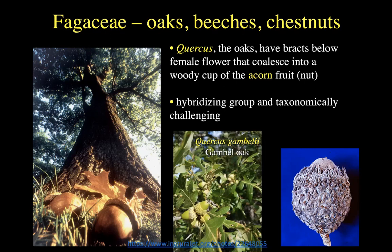Luckily, we have very healthy local species — Quercus gambelii, the Gambel's oak — which is incredibly common, a keystone species, definitely a species to know here in Colorado. We're going to see stands of this all over in the foothills ecosystem. The acorns are a very important food source for lots of animals. They have boom years and bust years for acorns, which really impacts all the animals that utilize them. An acorn itself is a nut — a dry, indehiscent fruit — and all the bracts at the base of the female flower coalesce into the adorable woody cup at the base of that nut.